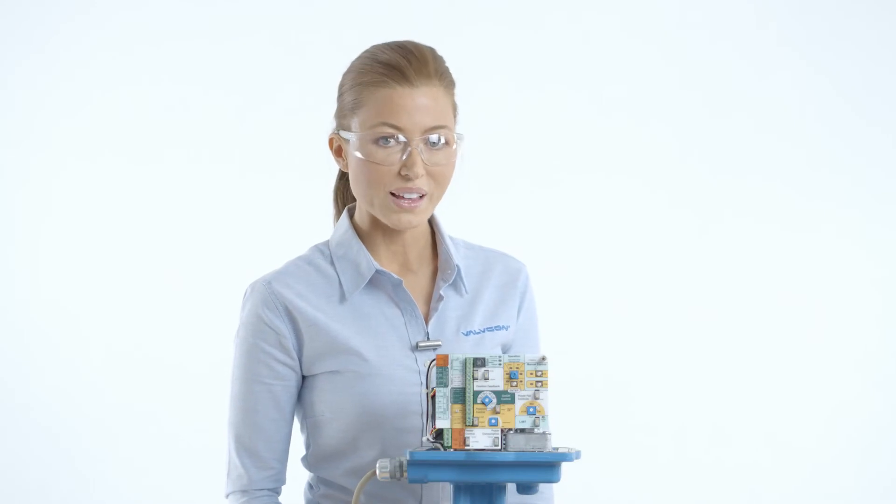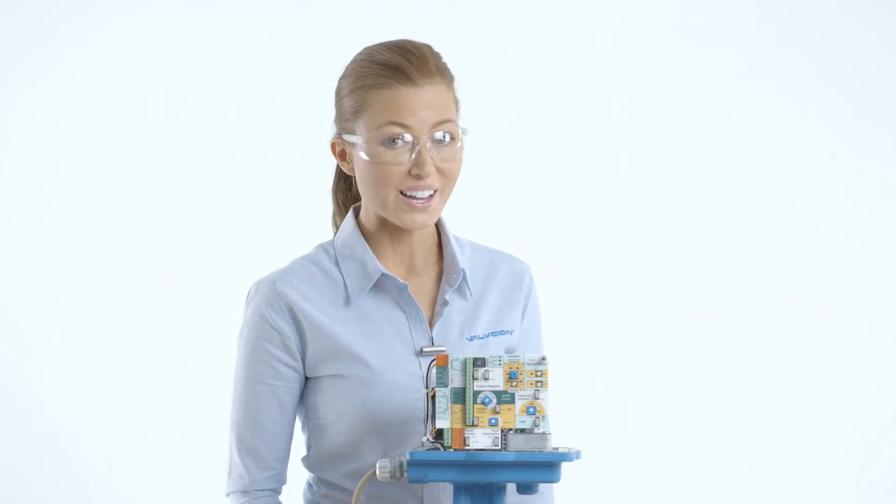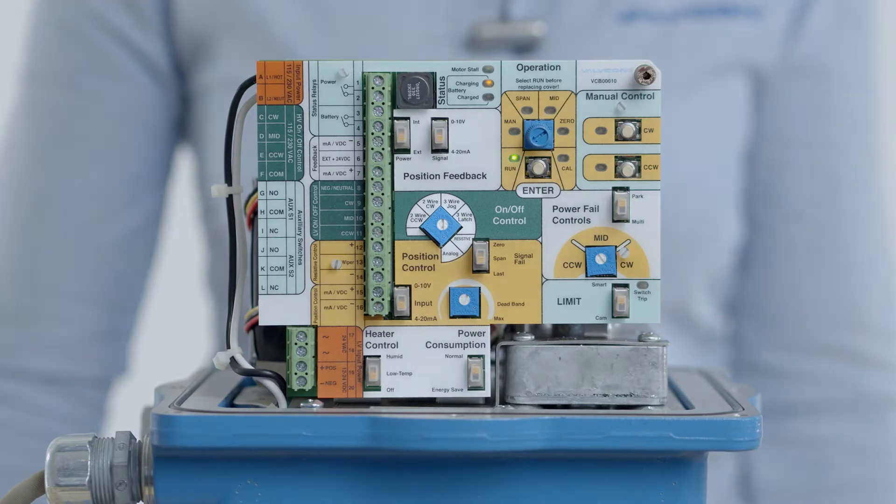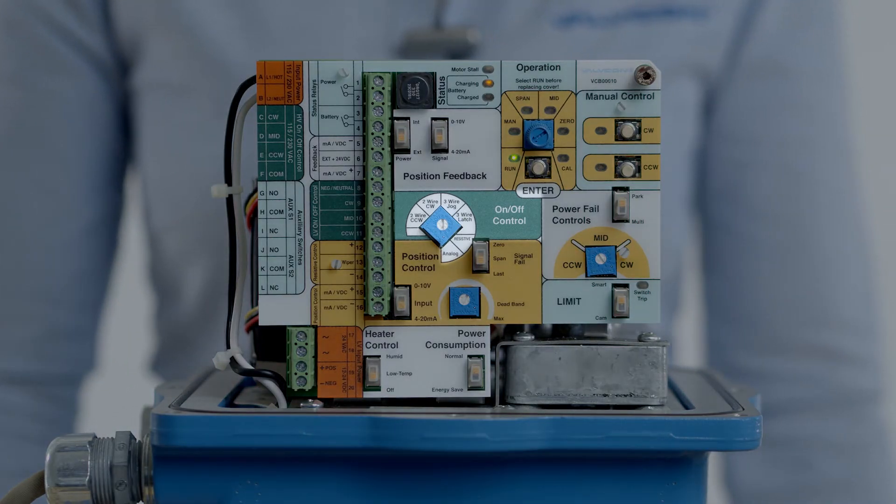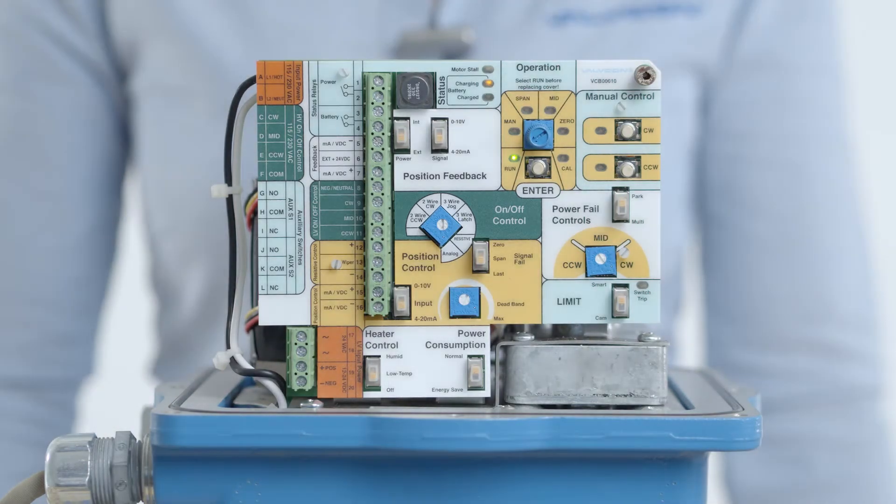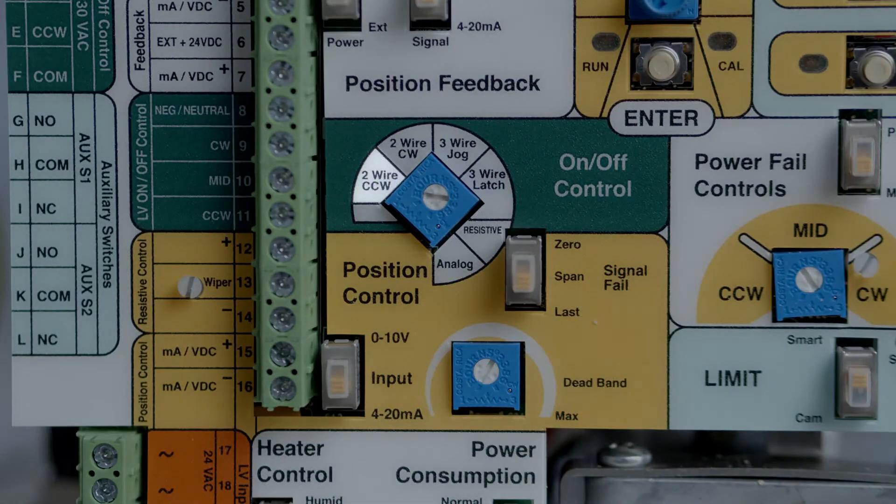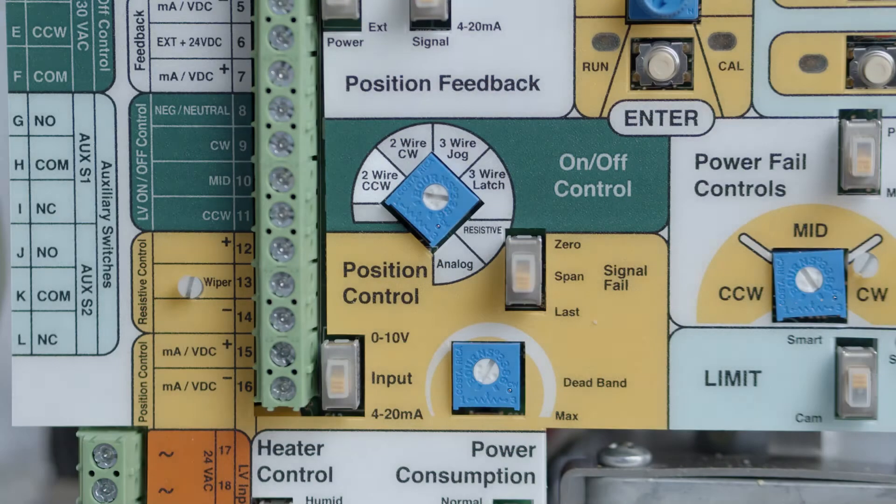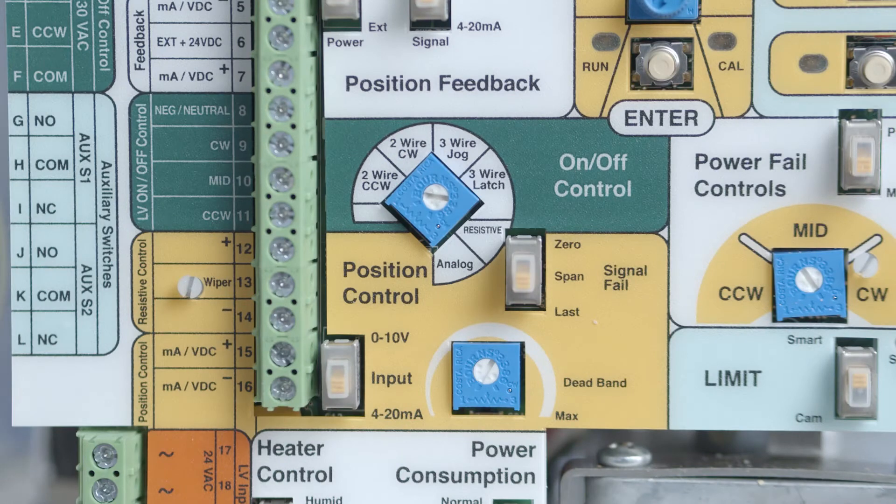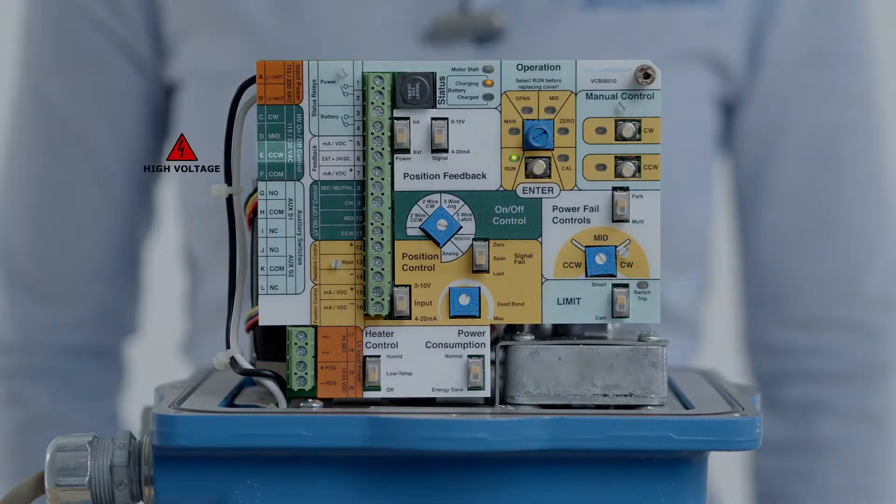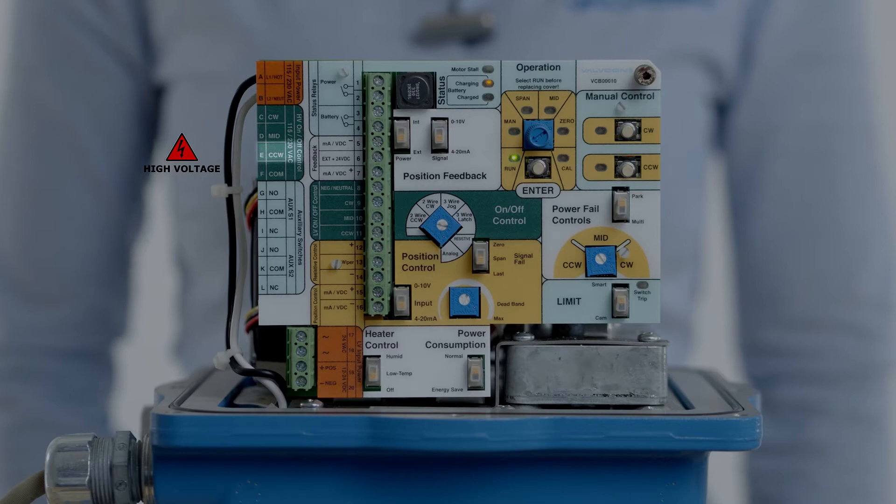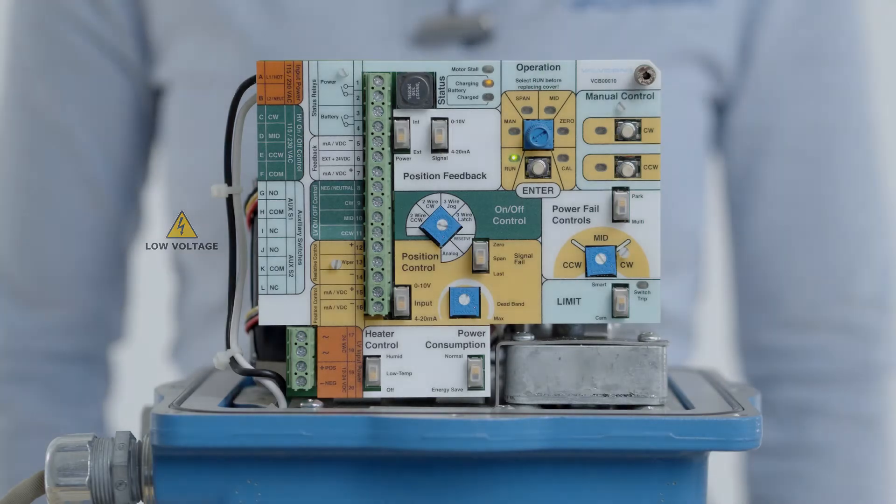The on-off control modes allow the actuator to drive in a desired direction in response to the application of control power. The different modes are as follows. In the two-wire CCW mode, the actuator will default to the clockwise position when only the main actuator power is present. The actuator will drive counterclockwise when the CCW control power is energized.